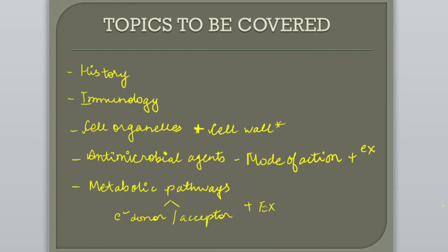These are the very important topics you must cover for your examination. The first topic is history, next is immunology, third is cell organelles and cell wall. Cell wall is very important — covering gram-negative bacteria, gram-positive bacteria, fungi, and archaeal bacteria. Next is antimicrobial agents, where you need to learn the mode of action of antibiotics, antifungal, and antiviral agents, along with their examples. Then metabolic pathways, where you need to learn the examples.